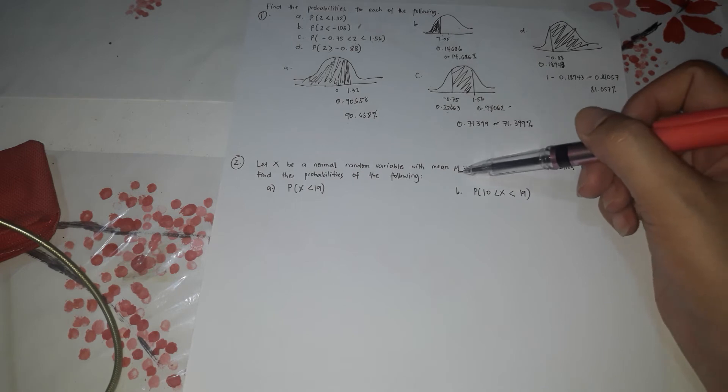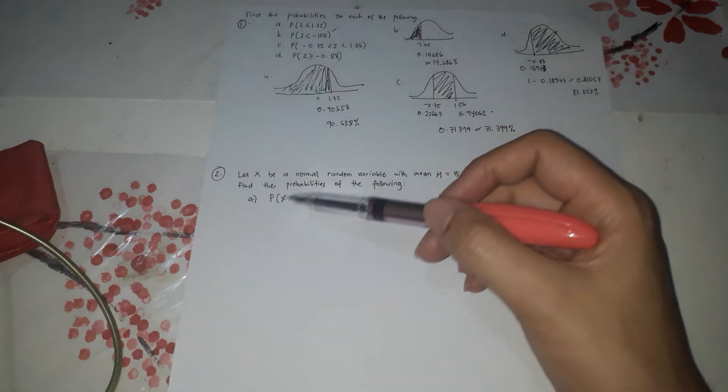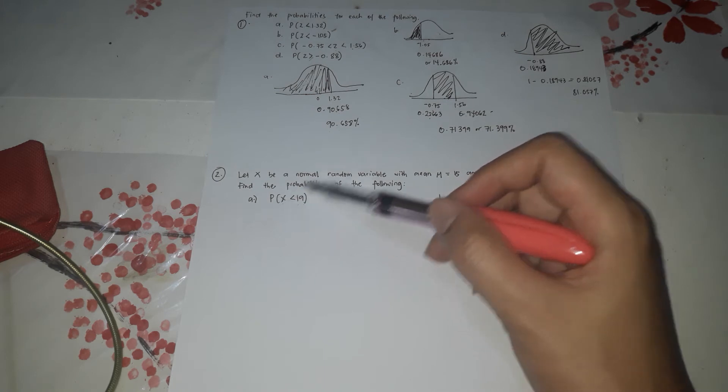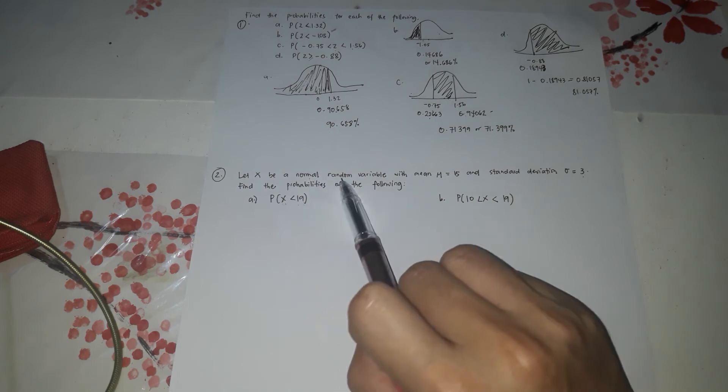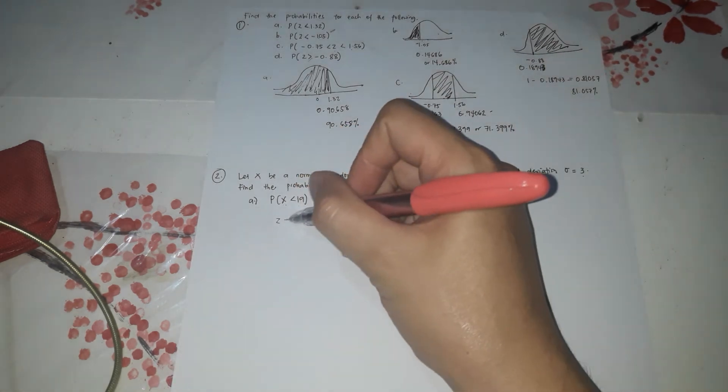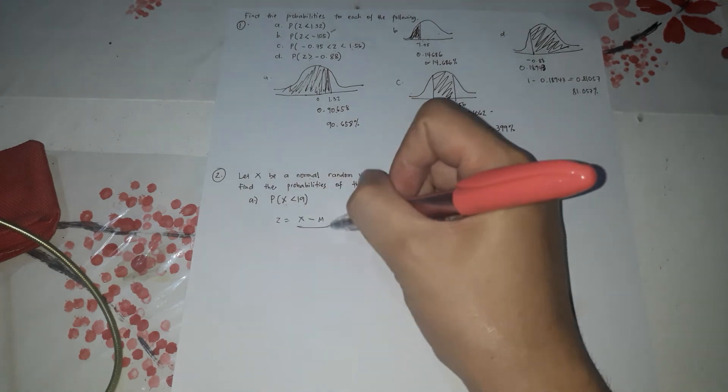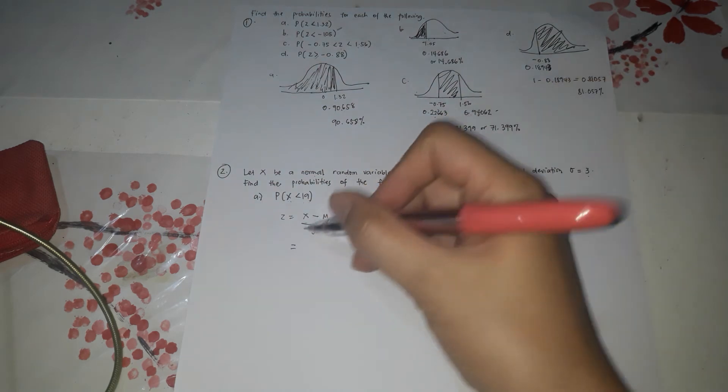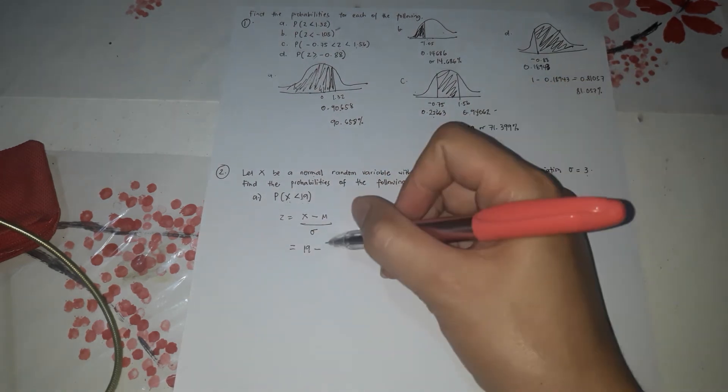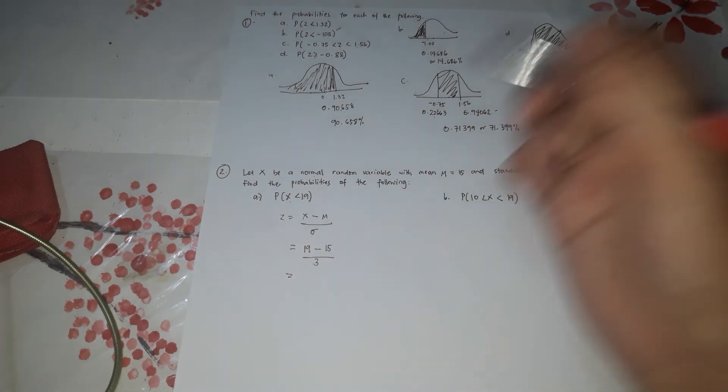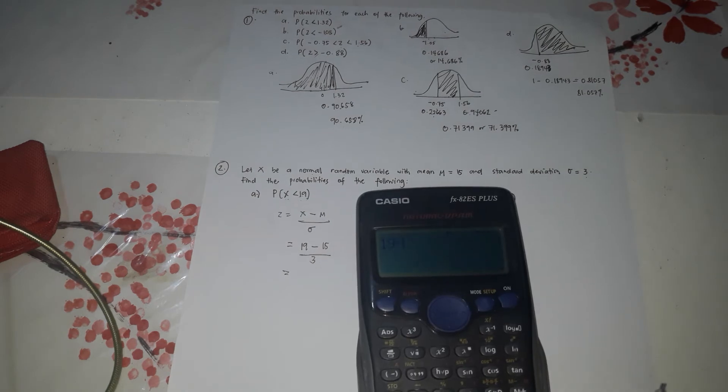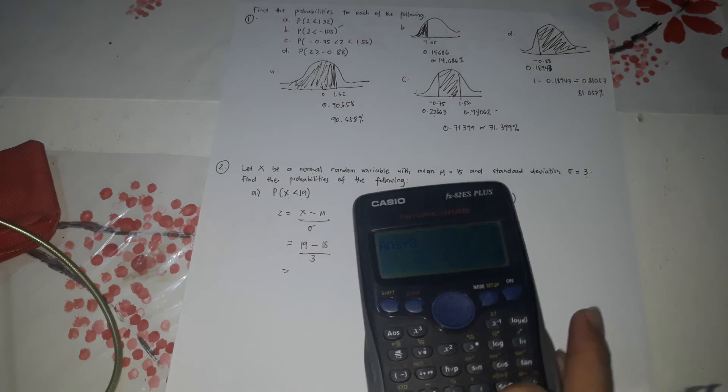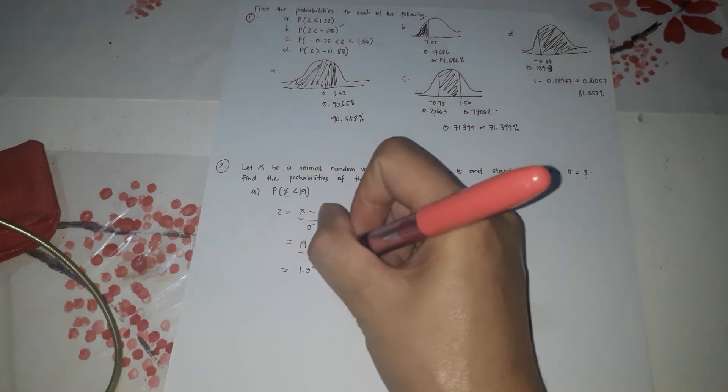Now let x be a normal random variable for problem number 2 with mean which is 15 and standard deviation of 3. Find the probabilities of the following that x is greater than 19. And x is the random variable. So we'll change that to z. Z is x minus mu over sigma. So x is 19 minus 15 divided by 3.